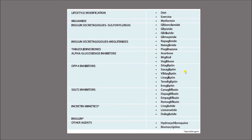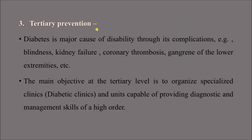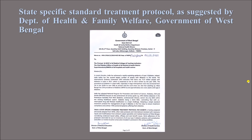Tertiary prevention applies when the disease has progressed and complications have developed. Diabetes is a major cause of disability through complications such as blindness, kidney failure, coronary thrombosis, and gangrene of the lower extremities. The main objective at the tertiary level is to organize specialized clinics — like diabetic clinics and diabetic foot clinics — capable of providing diagnostic and management skills of a higher order.